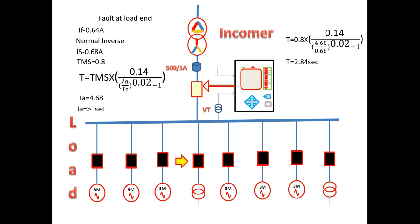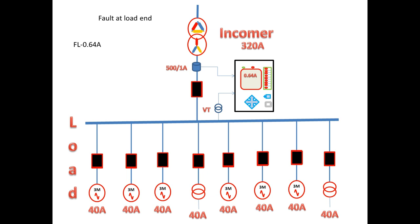The relay will give a trip command to the breaker. This is a heavy fault for the outgoing feeder, and waiting approximately 3 seconds is very dangerous for the outgoing feeder as well as the incoming transformer. So using IDMT for this fault at load end is not preferable.